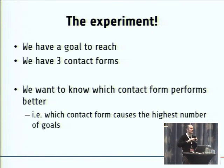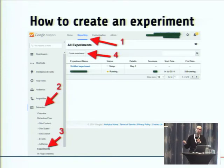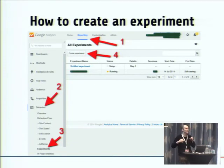Now we have the goal. We have the three contact forms. So we have all the ingredients necessary for our AB test. Let's create our first AB test on Google Analytics. To create one, go to the reporting section of your Analytics account, select Behavior, and select Experiments. On Google Analytics they don't speak about AB tests but about experiments, because there are two kinds of tests — AB test and multivariate test.